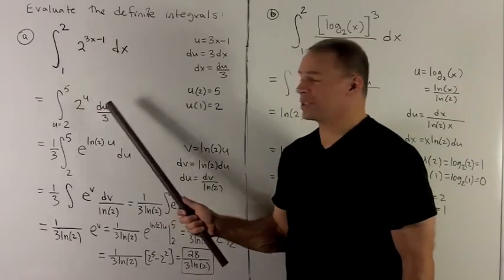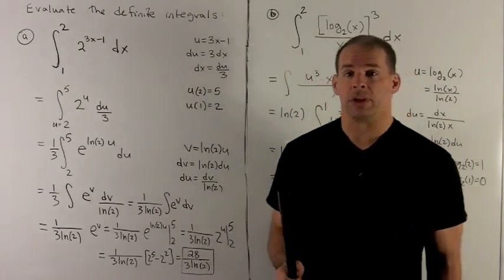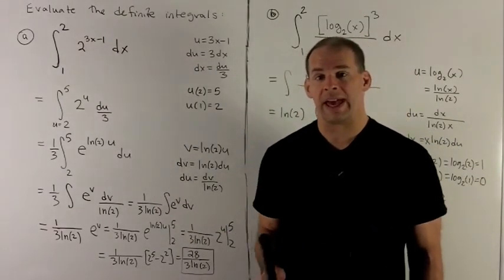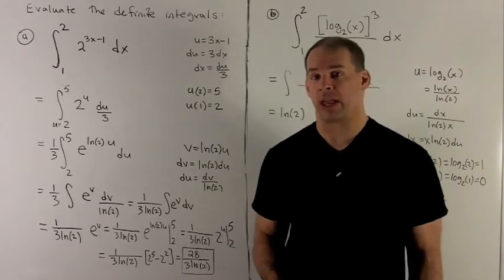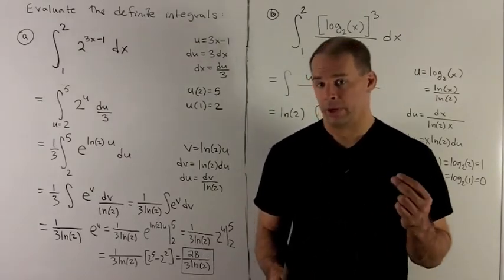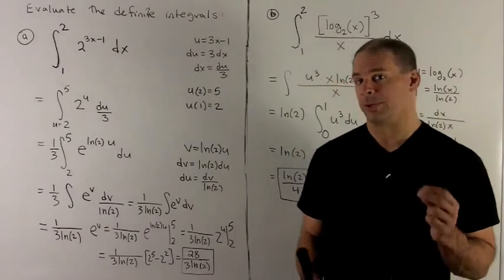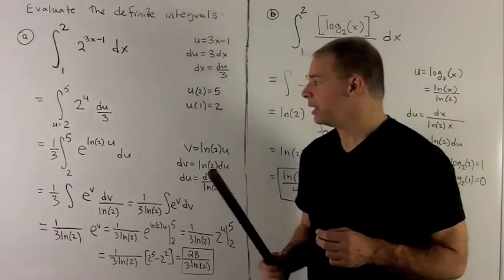Now, if you memorize this, any derivative of 2 to the u is just 2 to the u again, divided by natural log of 2. If you don't memorize that formula, we'll do it the long way here. So let's take a look.